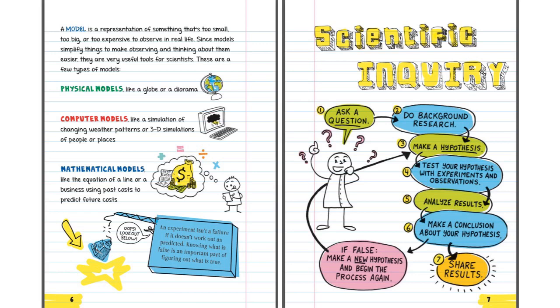An experiment isn't a failure if it doesn't work out as predicted. Knowing what is false is an important part of figuring out what is true.